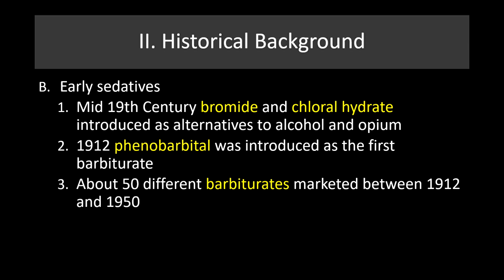The early sedatives: in the mid-19th century, bromide seltzers and chlorohydrate were introduced as alternatives to alcohol and opium, and were often abused. In 1912, phenobarbital was introduced as the first barbiturate — it is very rarely used today. Between 1912 and 1950, about 50 different barbiturates were marketed. These drugs can be very potent and therefore very dangerous, which we'll discuss in the next lecture on barbiturates.